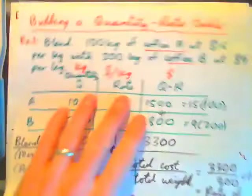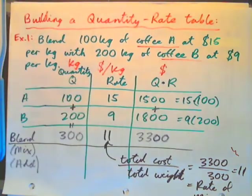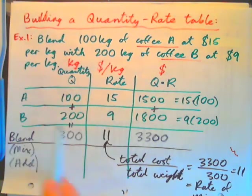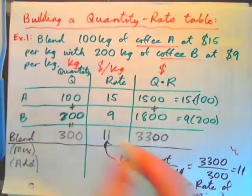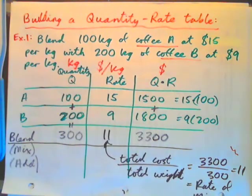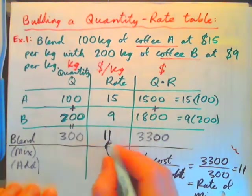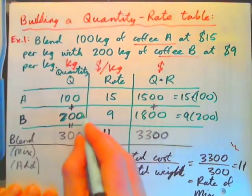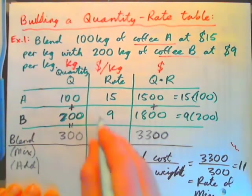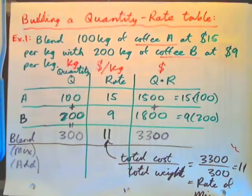And just quickly going back to this example, we blended two amounts of coffee. 100 kilograms coffee A, 200 kilograms coffee B, which is more? We blended in more of coffee B. And the price per kilogram of the blend is closer to the price per kilogram of coffee B, because there's more of coffee B blended in. Right?